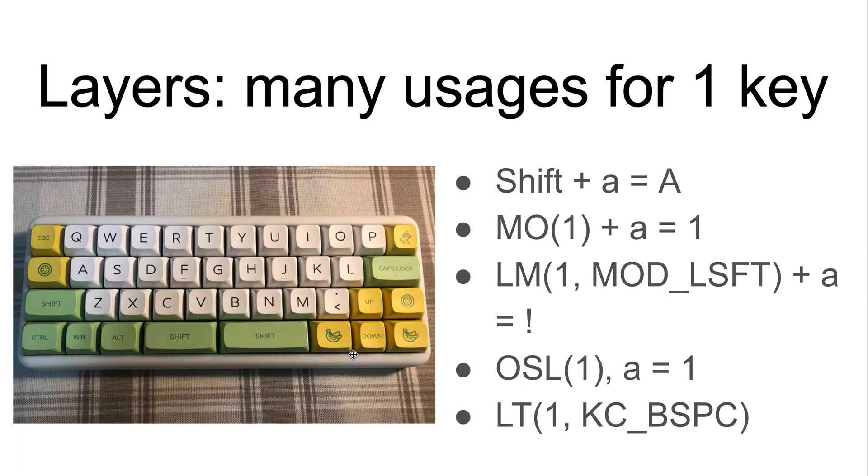The next concept is layers. You are already familiar with layers. For example, when you press the shift key at the same time with the A key, you get a capital letter A. So it is as if you have a second layer with capital letters, or with the special symbols on top of 1, 2, 3, 4, for example.